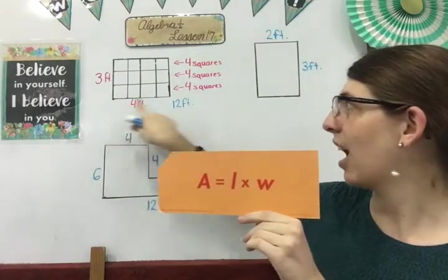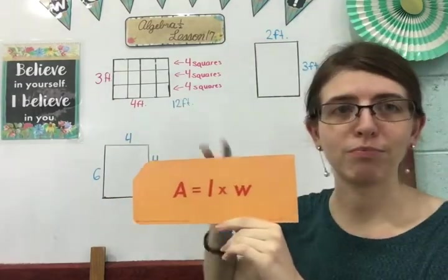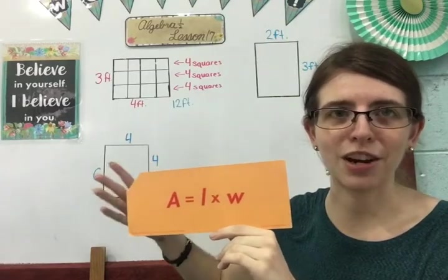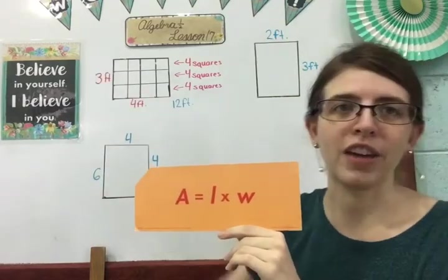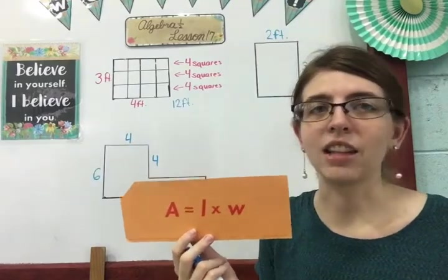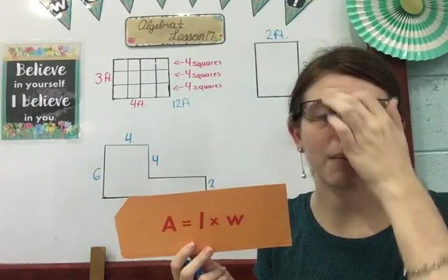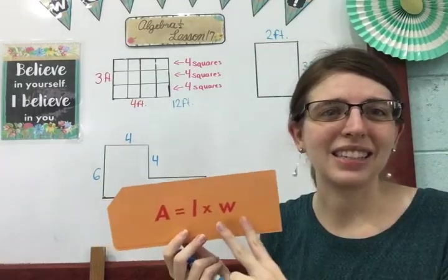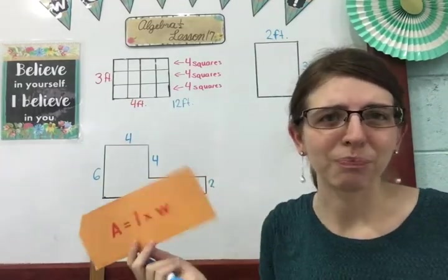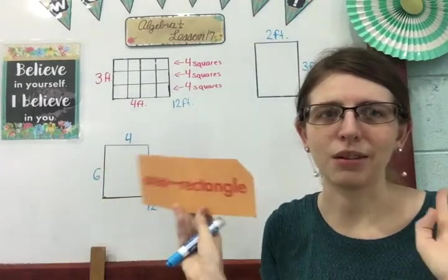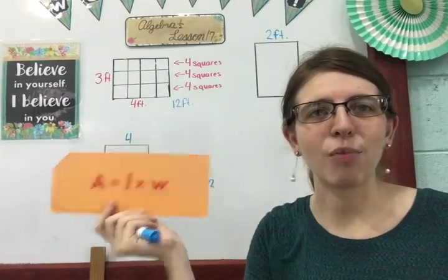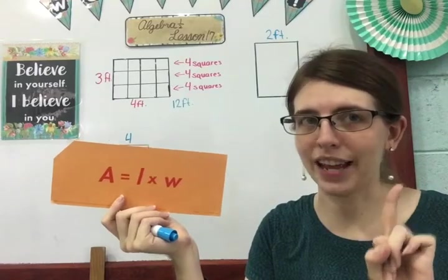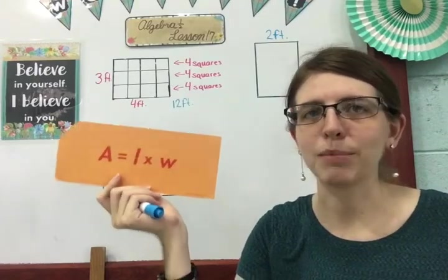The area is length times width. It's the length of your shape, your object, your figure, times the width of your figure. Typically we say the length is the longest side, so the bigger number, and your width is the smaller number. It doesn't really matter because the order doesn't matter when you are multiplying. That's the formula for the area of a rectangle.